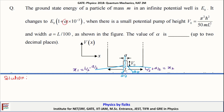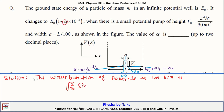The wave function of a particle in a 1D box is ψ = √(2/L) sin(πx/L), that is ψ₁.